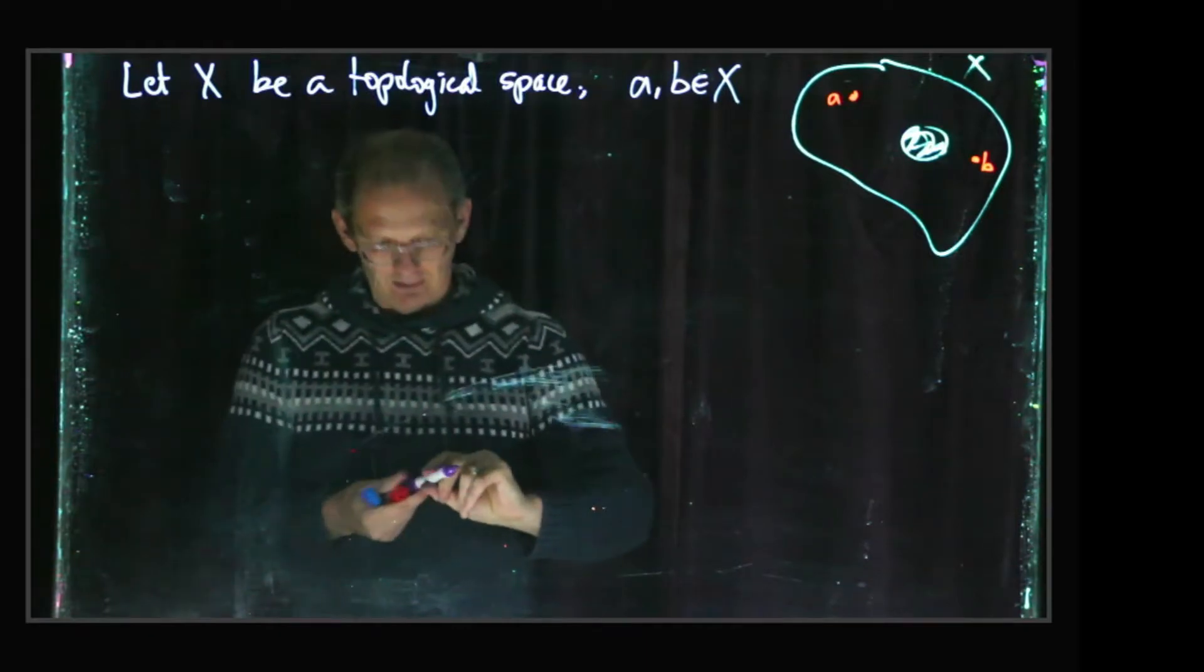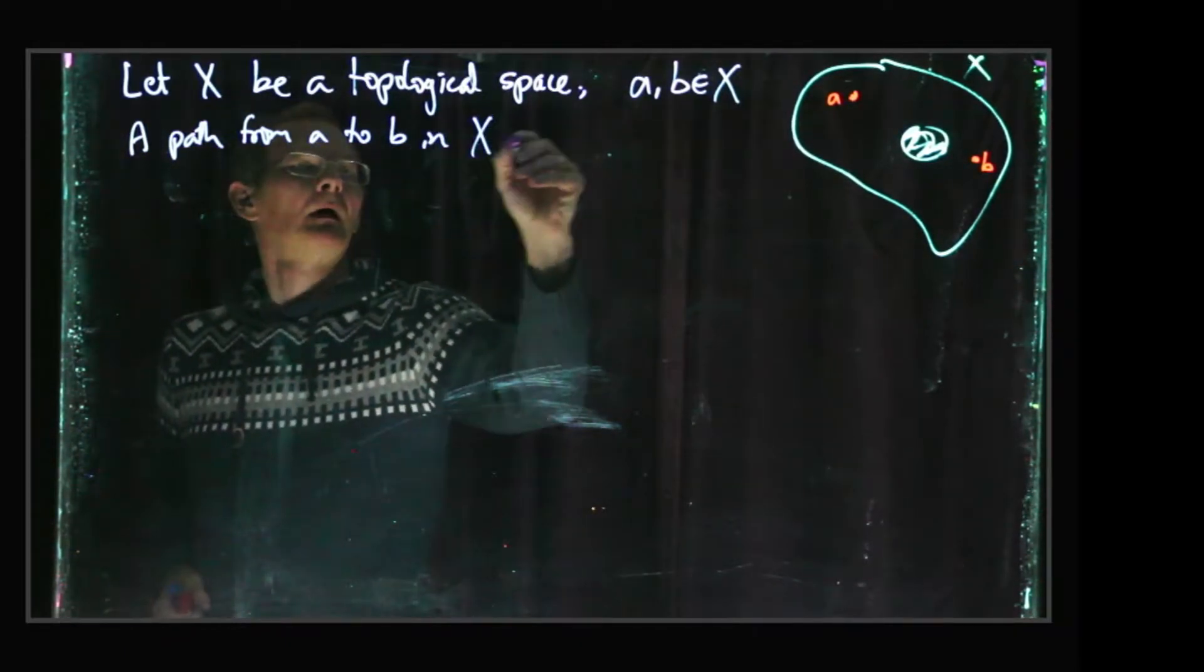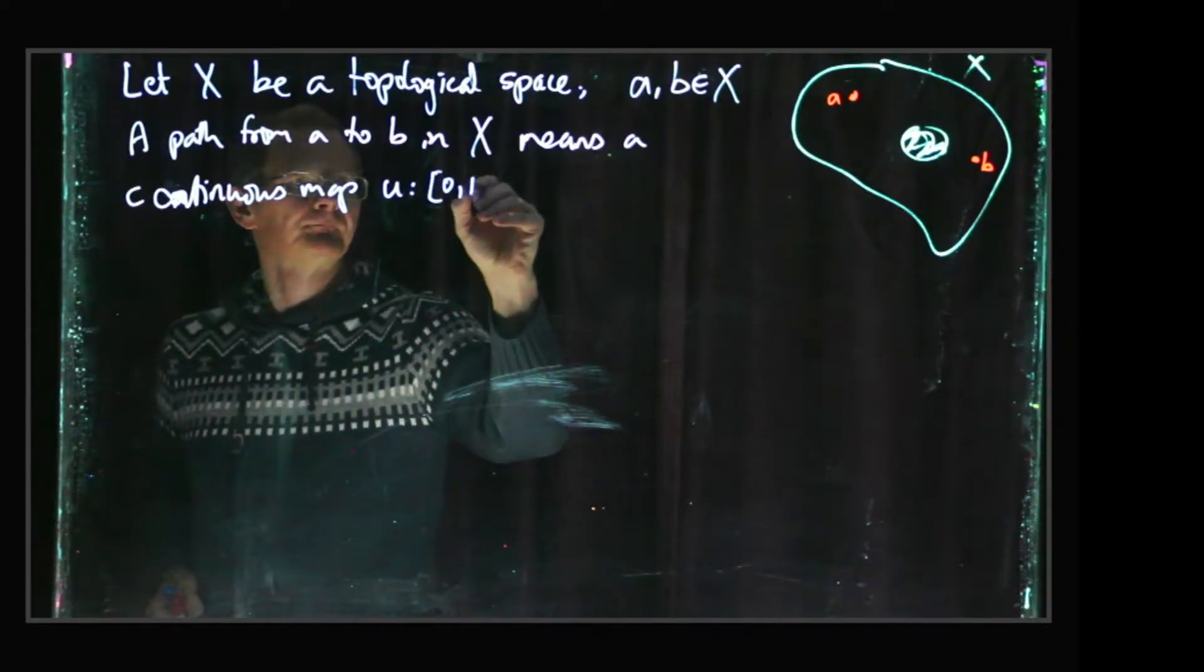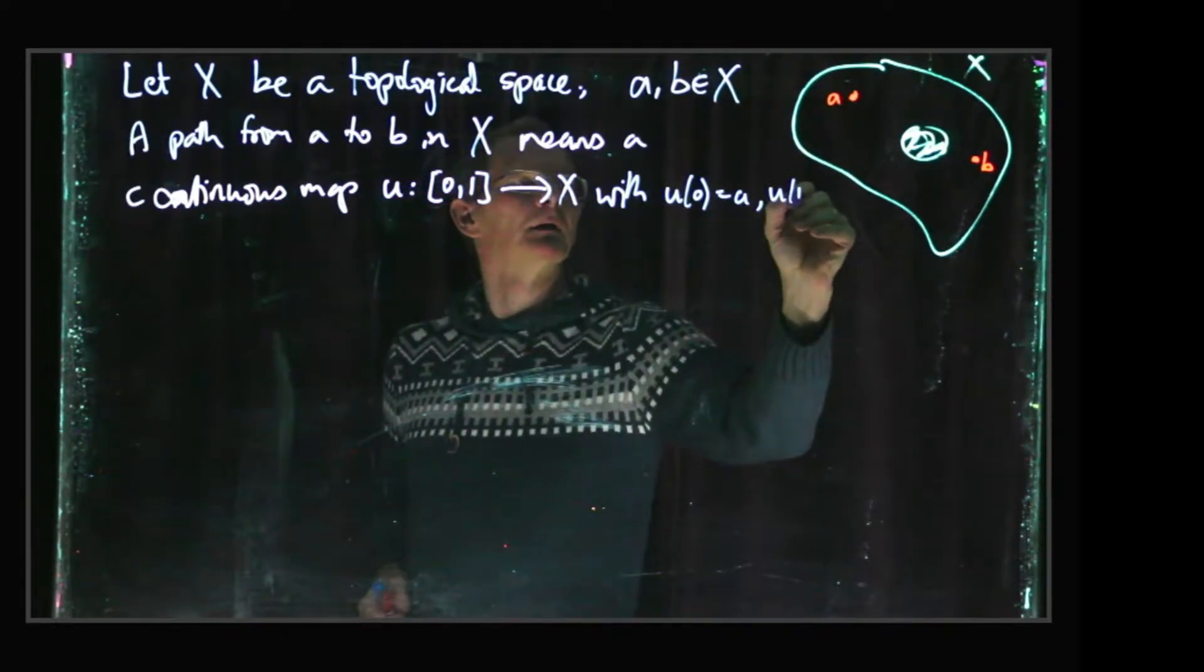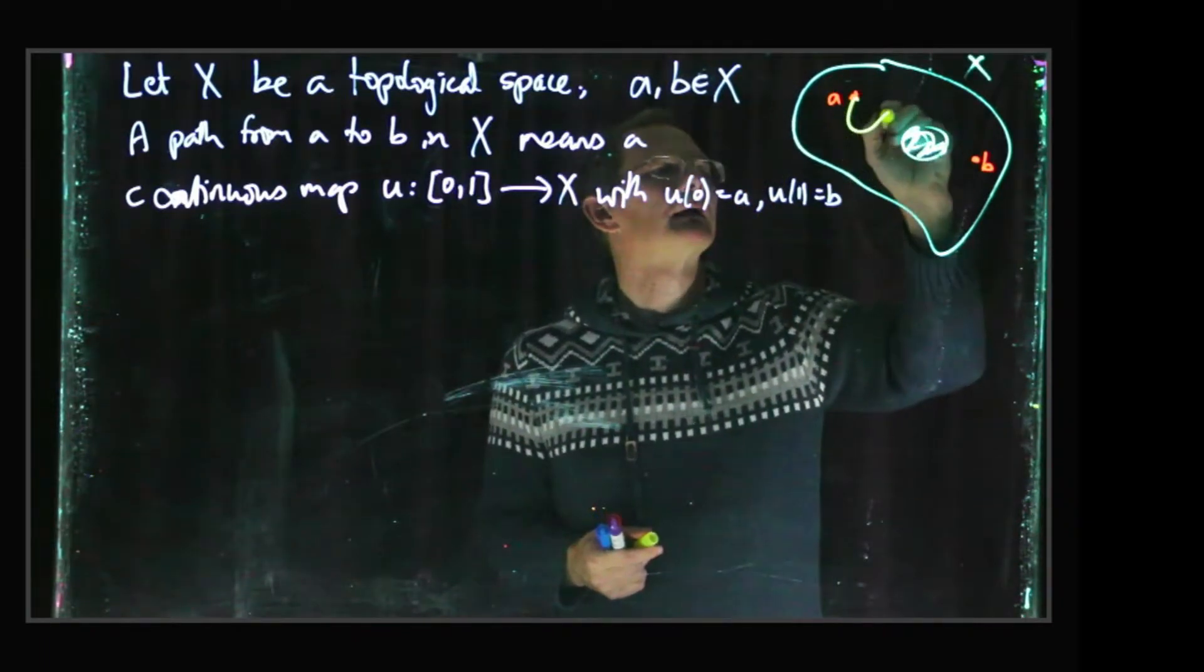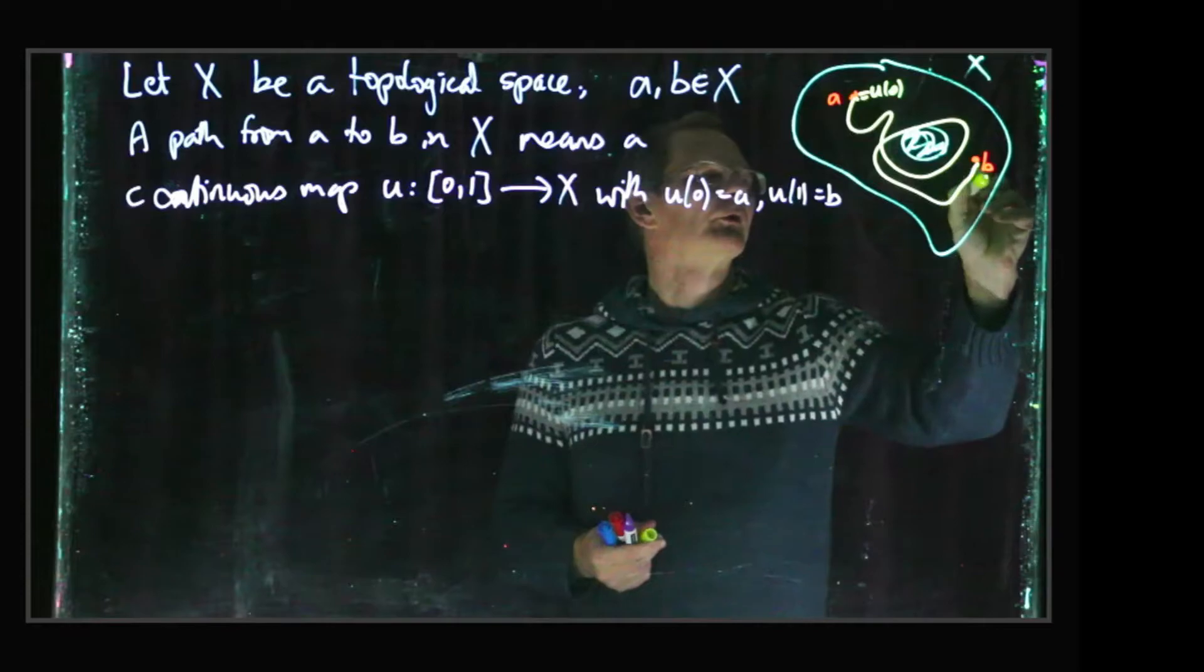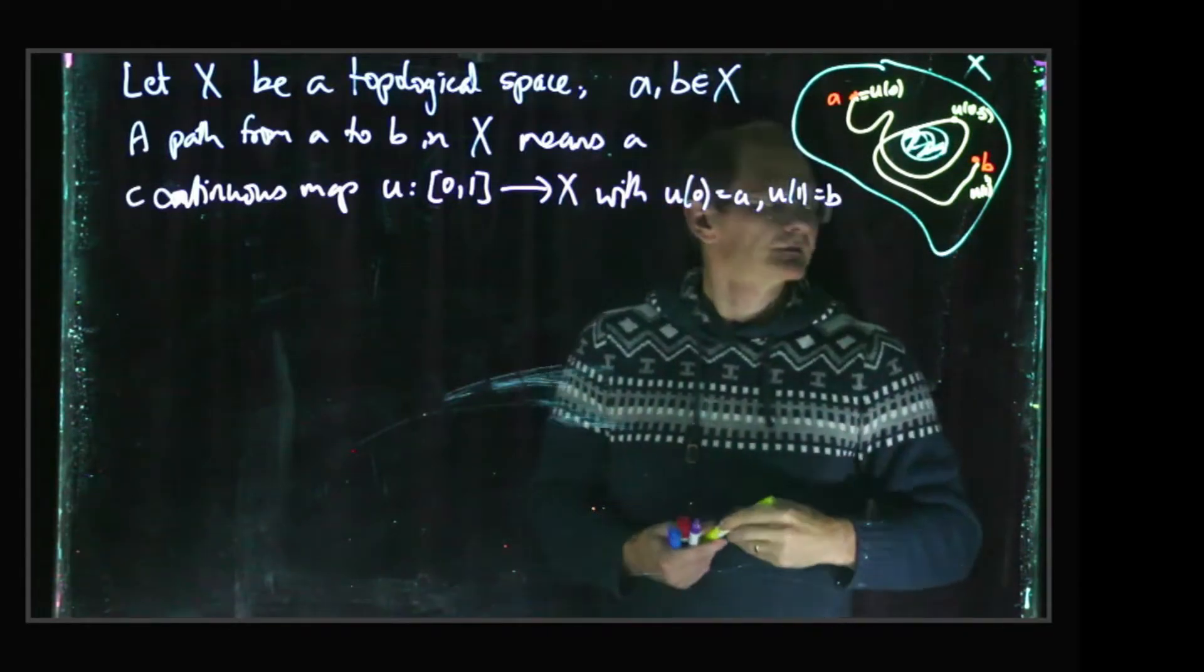And so a path from A to B in X means a continuous map, U from the unit interval to X, with U(0) is A, U(1) is B. And I'll kind of take a picture of that again, just like a path from A to B, staying within the space X. So yeah, this was U(0), this one was U(1), and some point around here might be U of 0.5. So that's what we mean by a path.